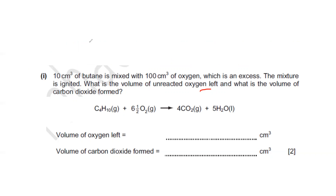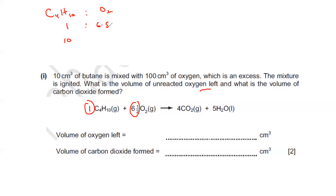To find what volume of oxygen is left, first we find how much oxygen will react. We have the equation C₄H₁₀ (butane) reacting with O₂. The ratio between butane and oxygen is 1 : 6.5, meaning one molecule of butane reacts with 6.5 molecules of oxygen. So if we have 10 cm³ of butane, we cross multiply to find X, the volume of oxygen that reacts.